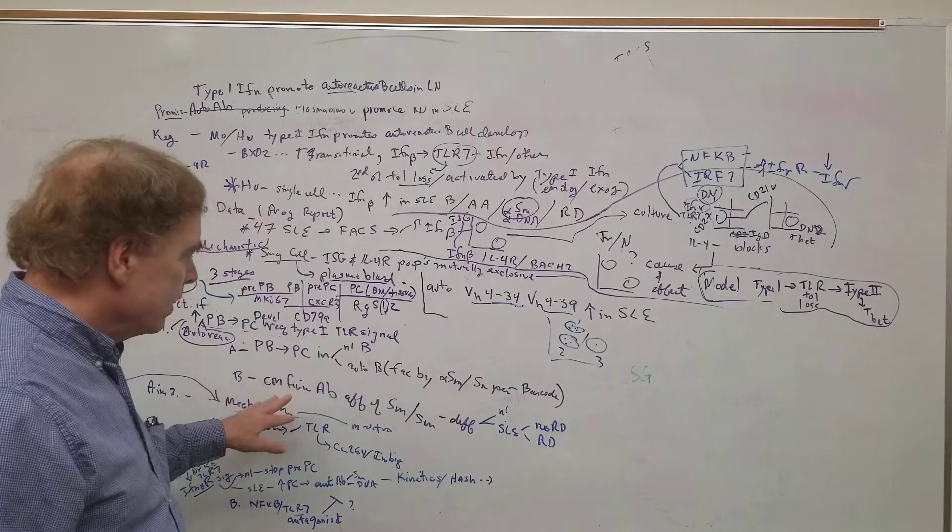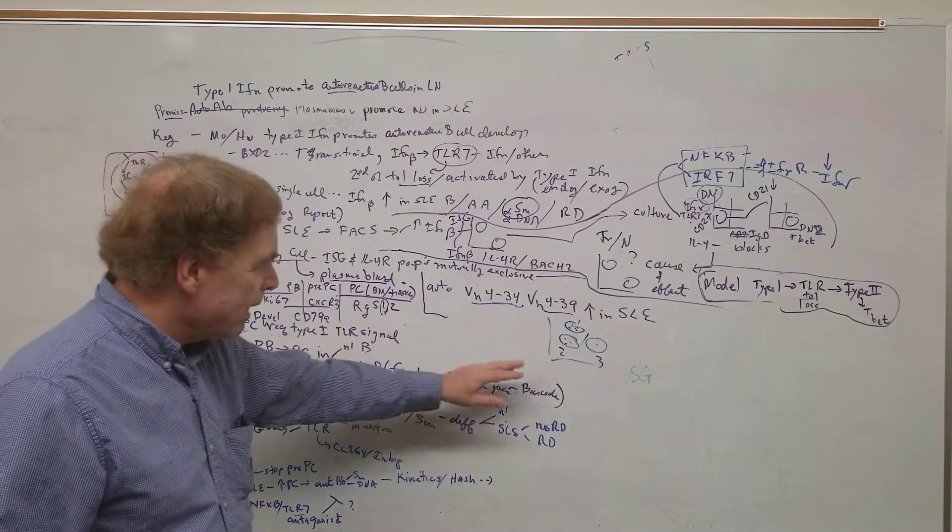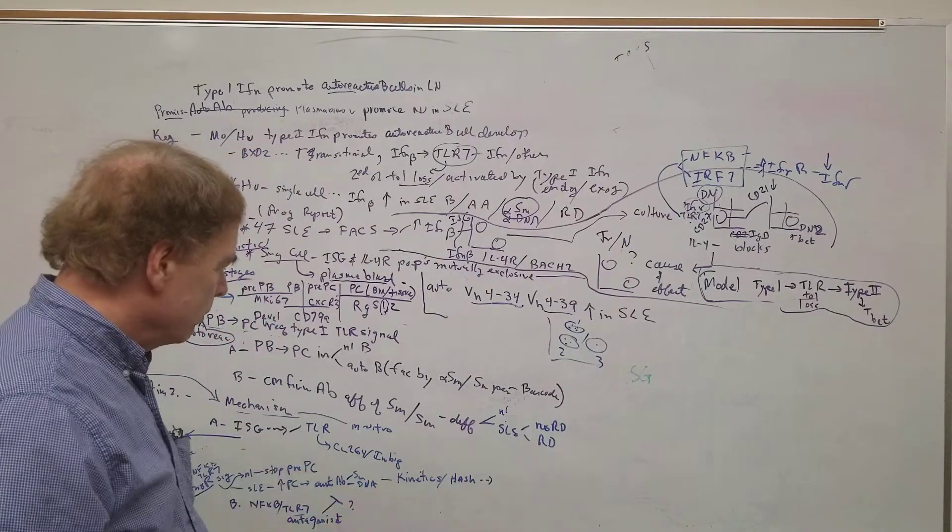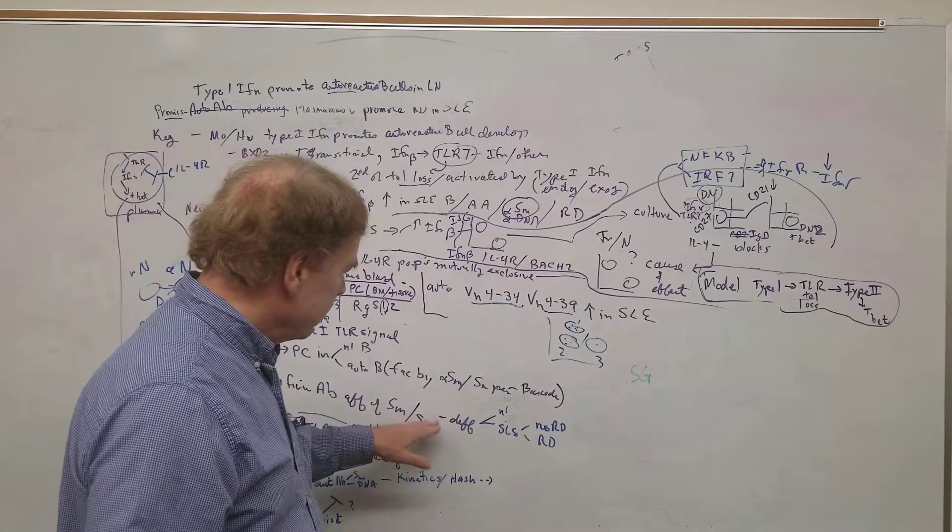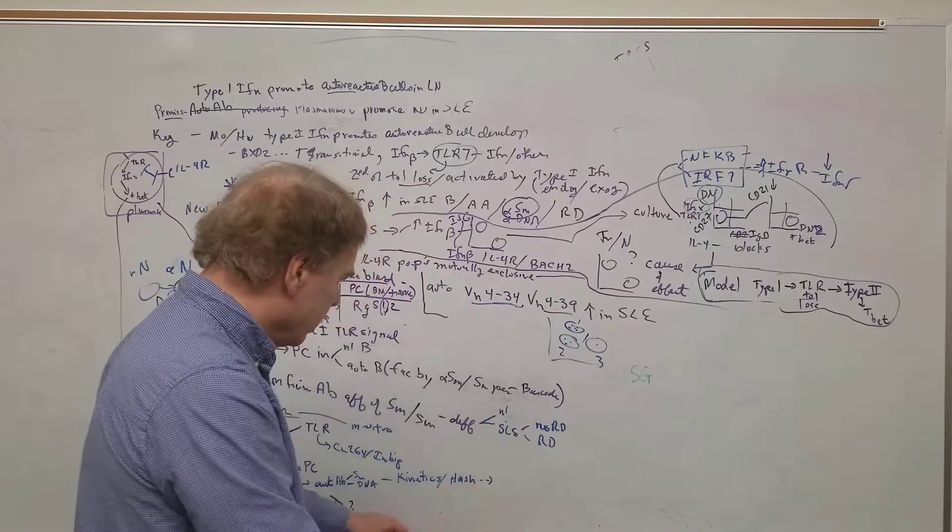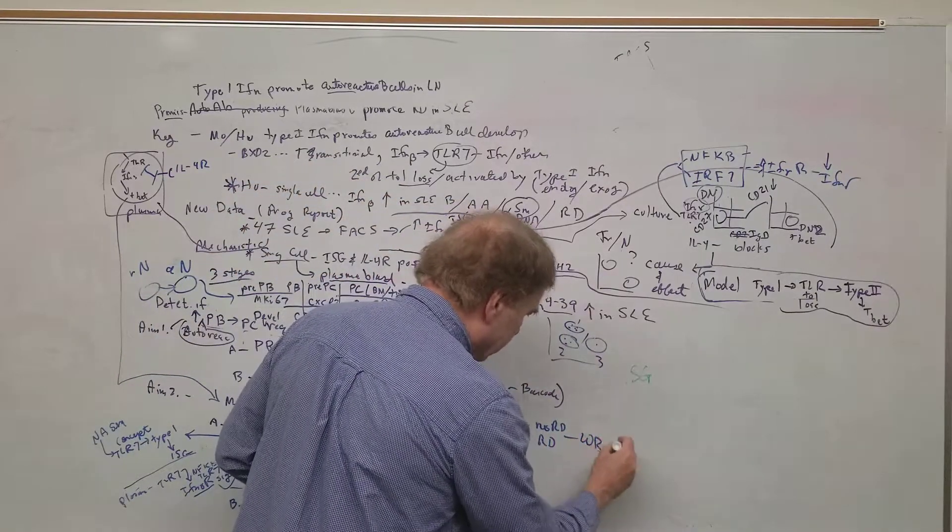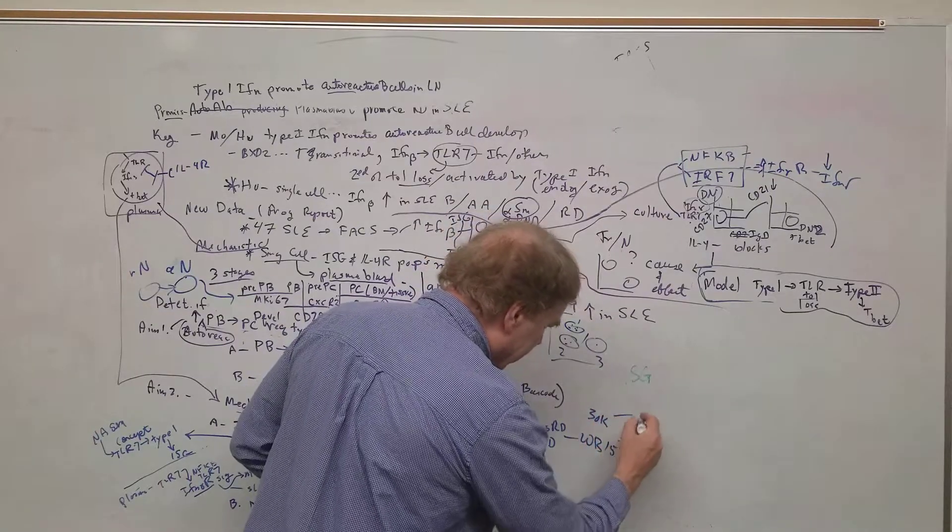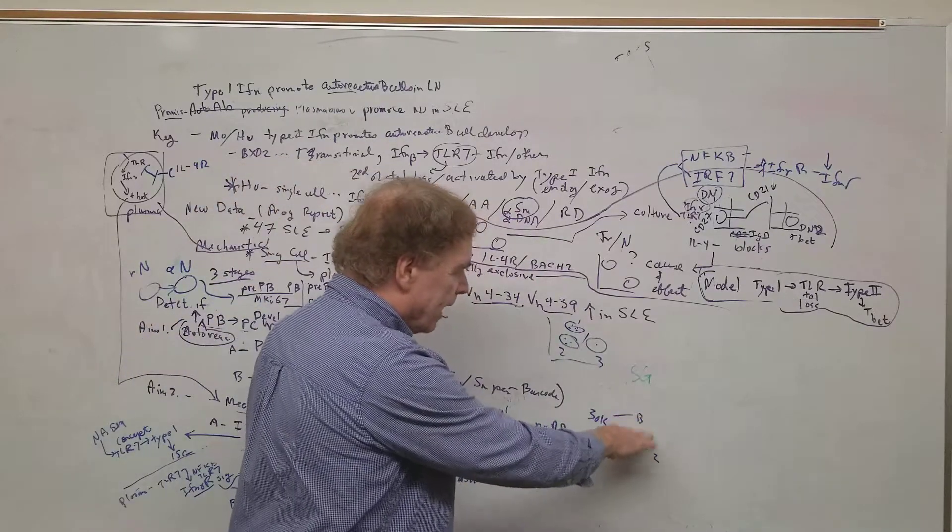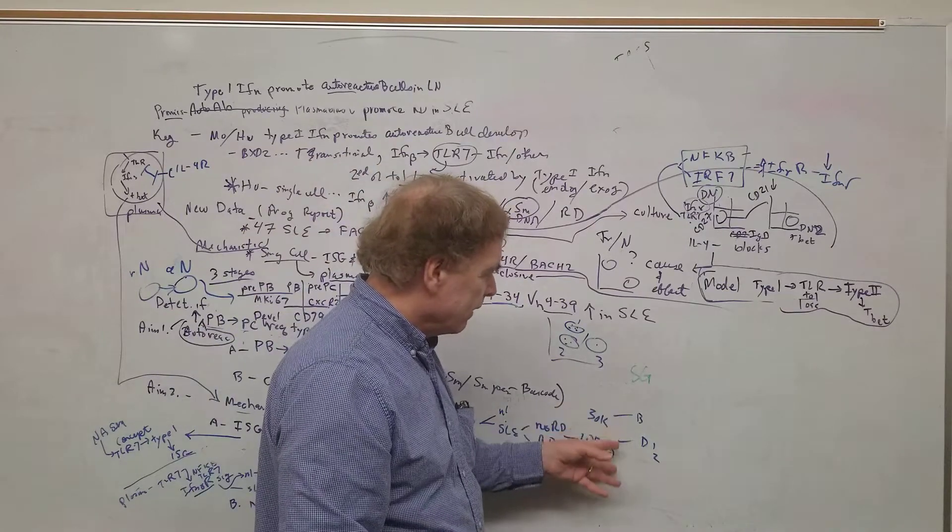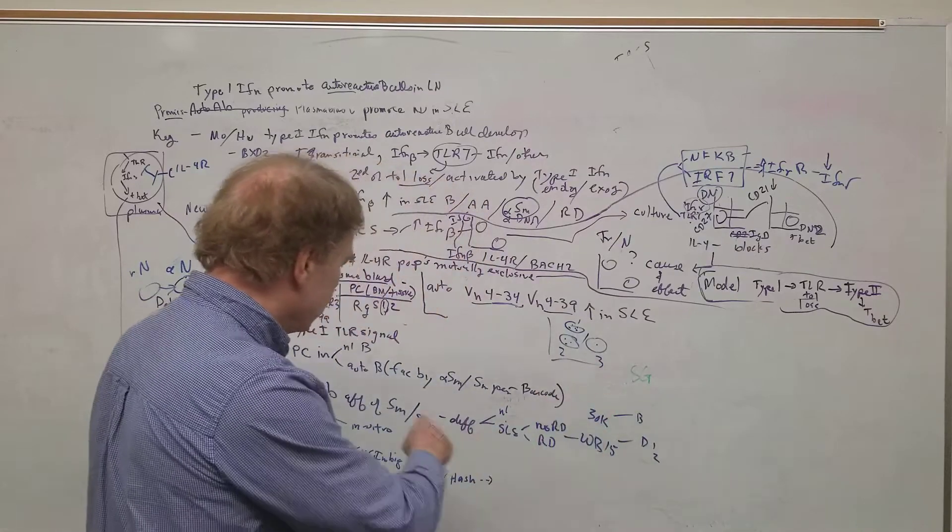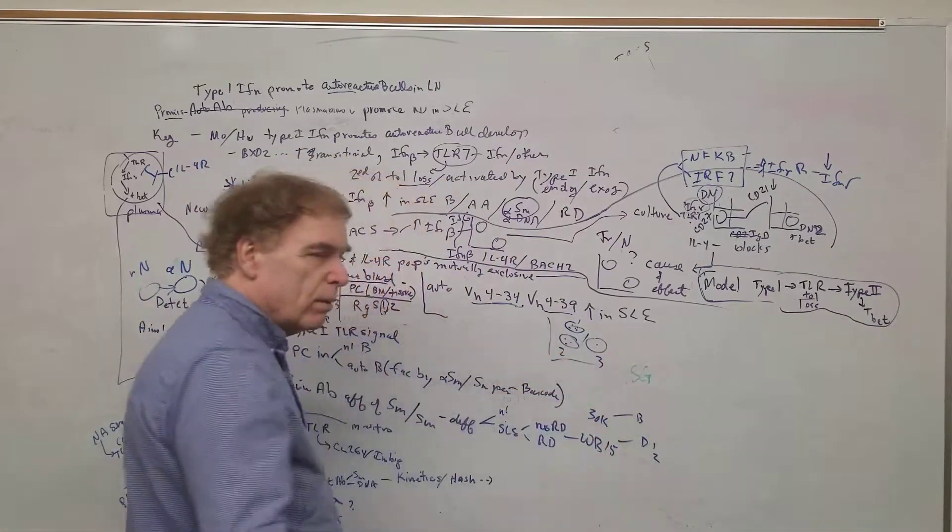Because in the model, you're going to put IL-4 receptor on there. And the question was, I think that blocks this. But it could be this blocks that. And that's something you can test. In fact, it looks like it goes both ways. Because type 1 interferon promotes DN2. But if you pre-treat with IL-4, then it blocks that. But if you pre-treat with interferon beta, then it doesn't block that. So the interferon beta IL-4, then it sort of doesn't work.